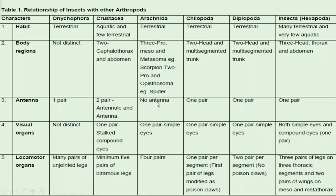Regarding visual organs: Onycophora has no distinct visual organs. Crustacea has one pair of stalked compound eyes. Arachnida has one pair of simple eyes. Chilopoda has one pair of simple eyes. Diplopoda also has one pair of simple eyes. Insects have both simple eyes and compound eyes — a distinctive character of the insect class.